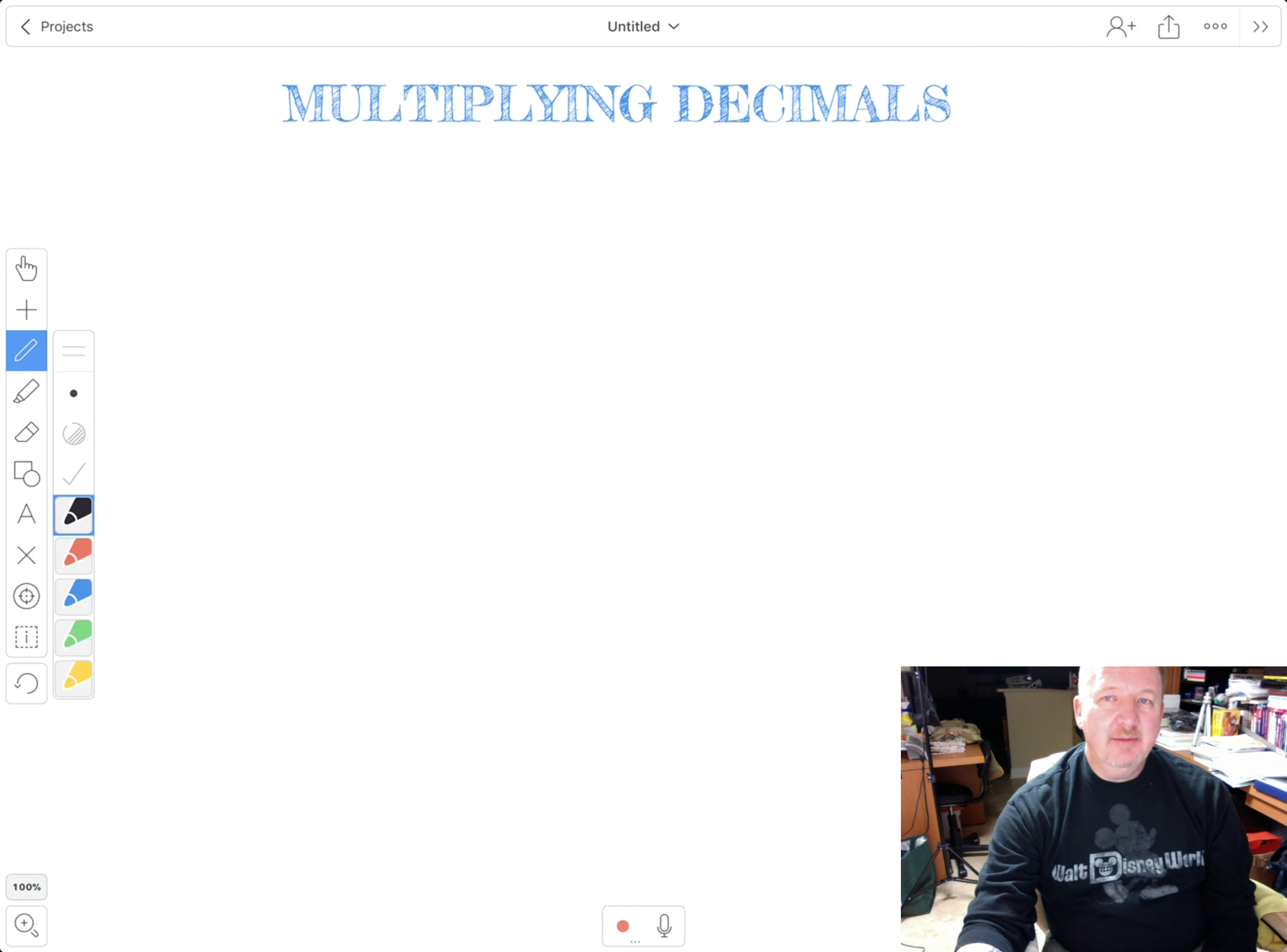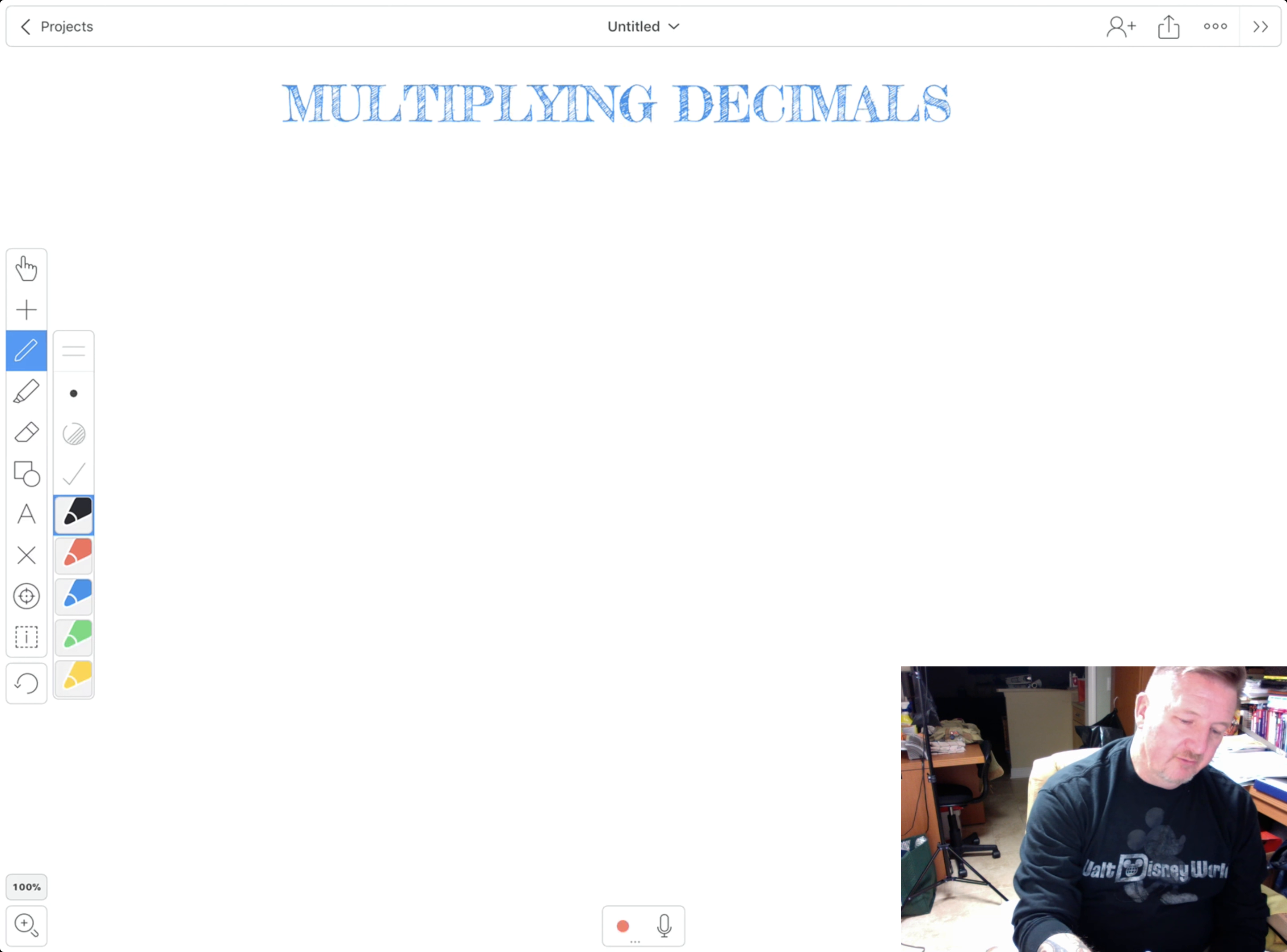Hey boys and girls, today we're going to be talking about multiplying decimals. So let's go ahead and get started. I'm only going to do one example, I'm going to try to make this as quick as I can. I have 1.25 times 0.3.